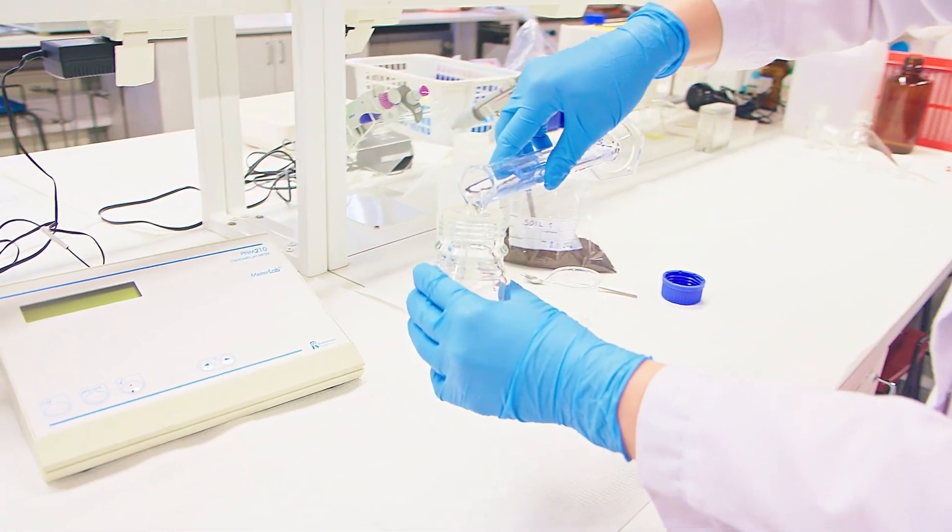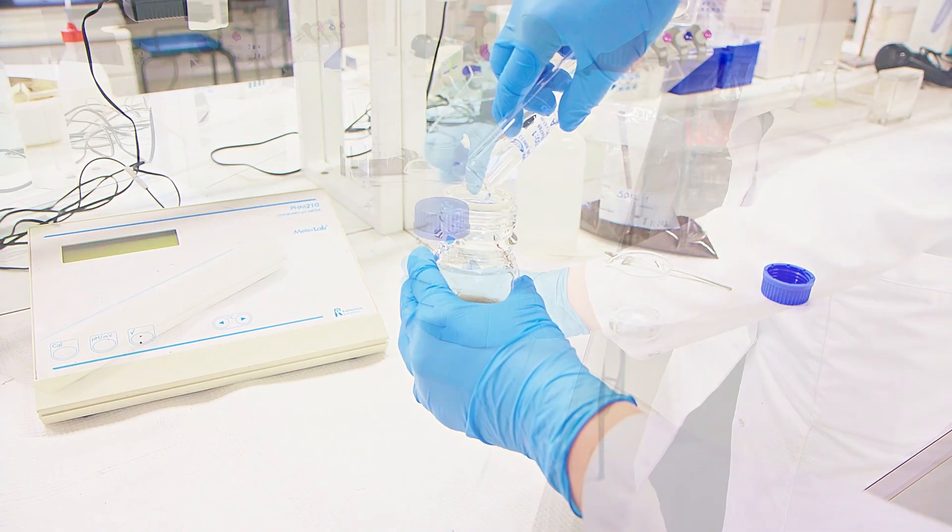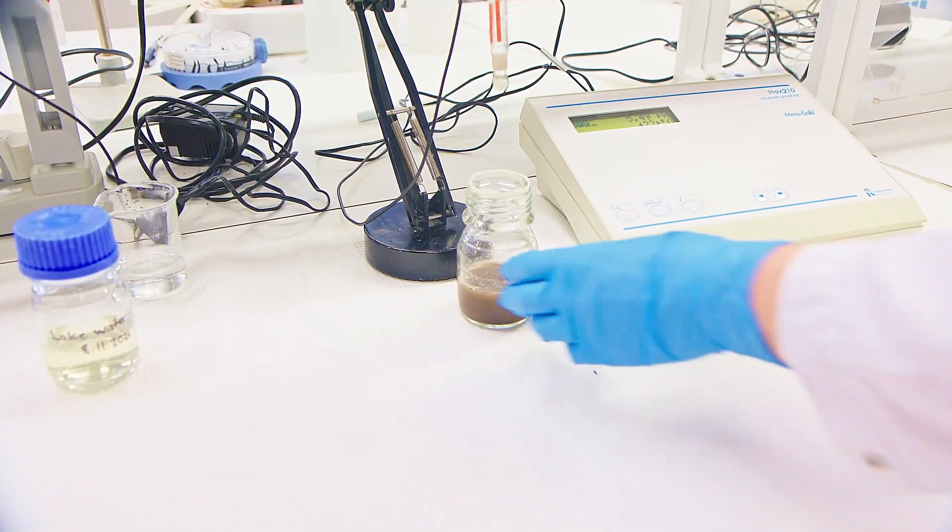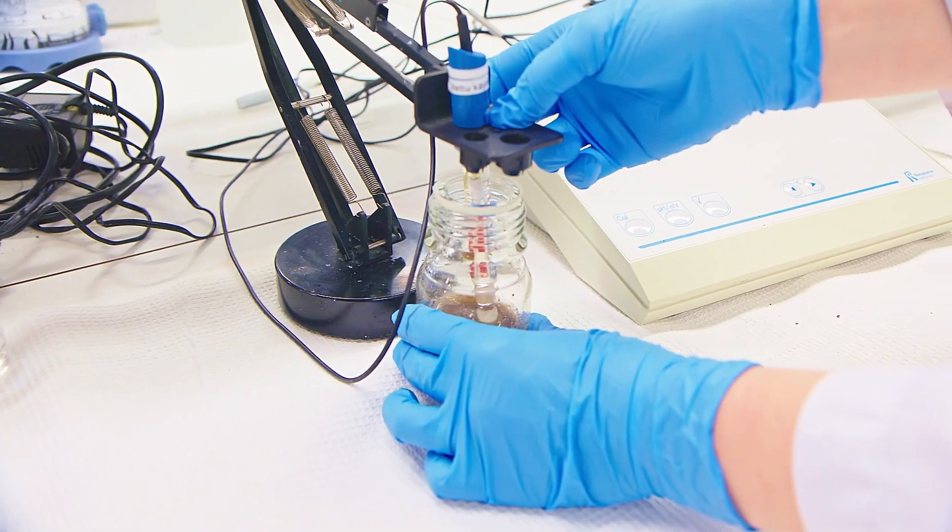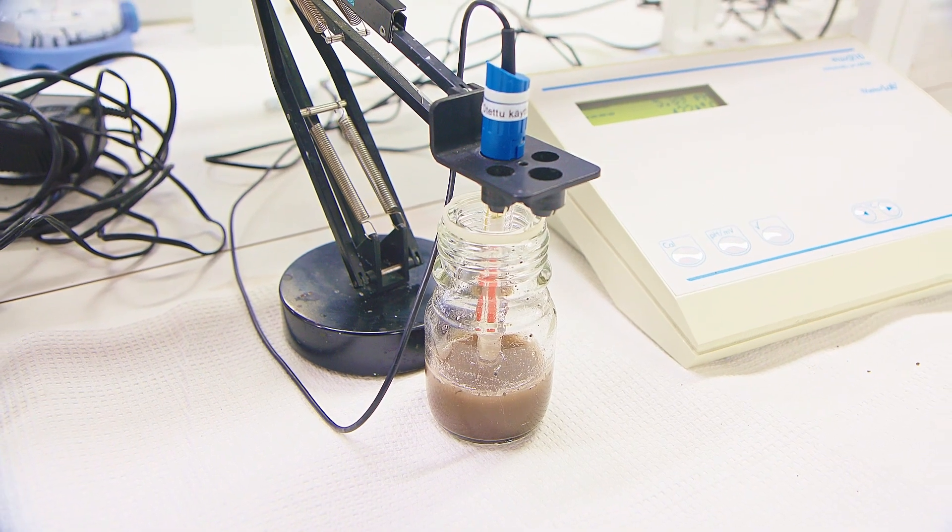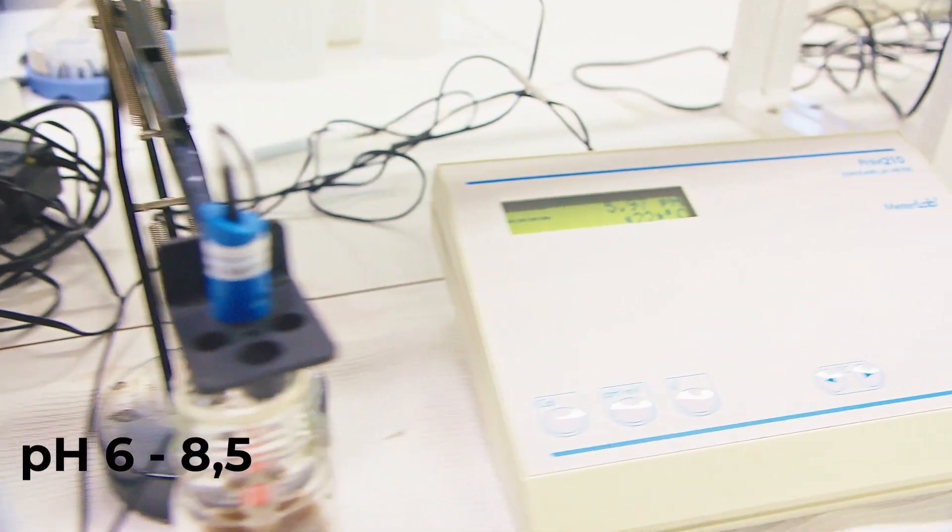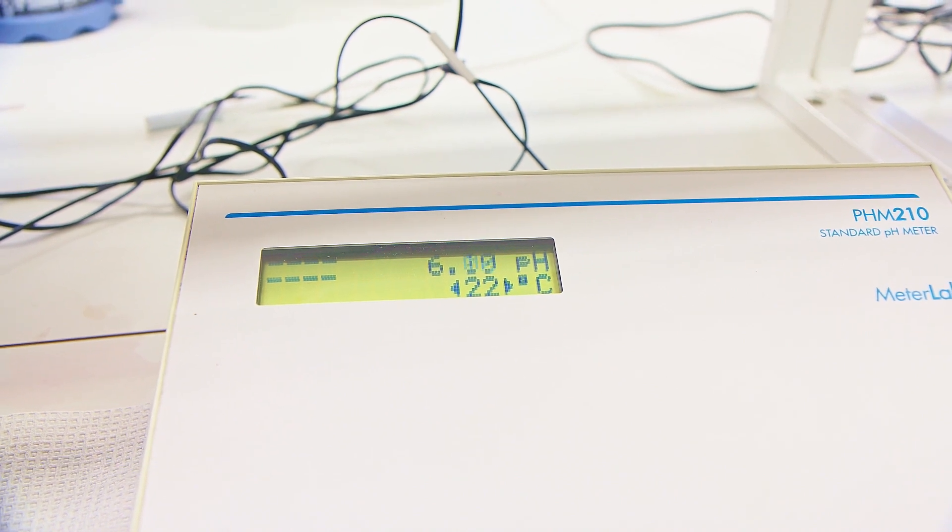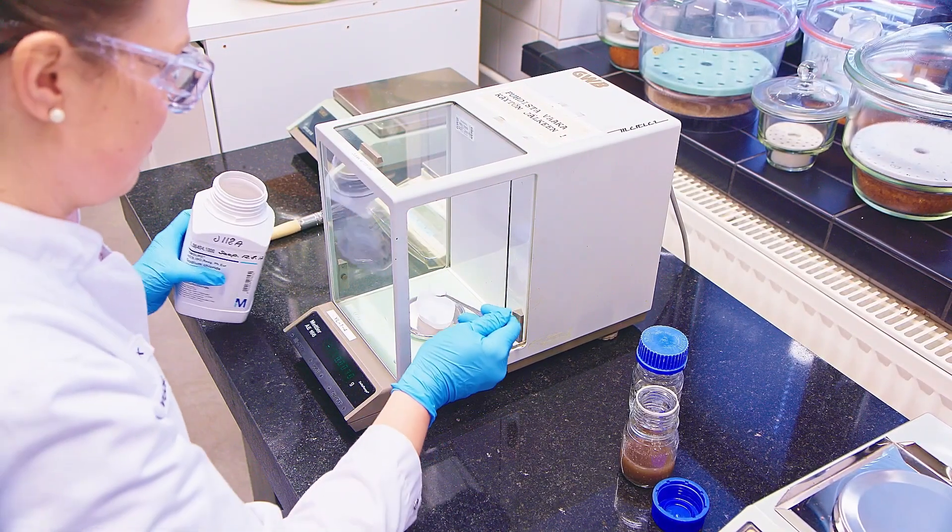Water suspensions are prepared of solid samples such as sediment and soil samples by mixing the sample in water with a mass ratio of for example 10% or 20%. The pH of the samples should be close to neutral, meaning between 6 and 8.5. The pH value of the sample is adjusted if necessary.